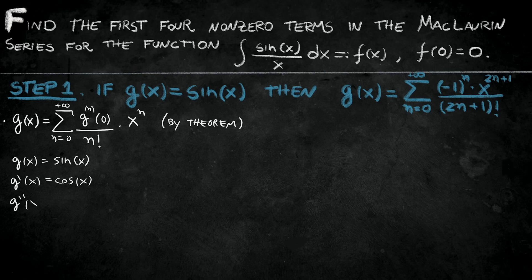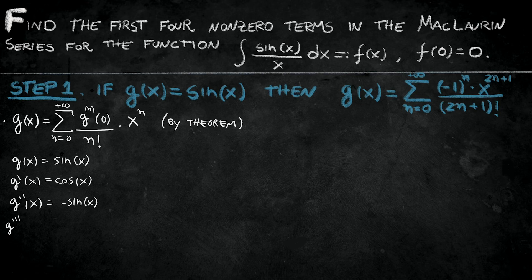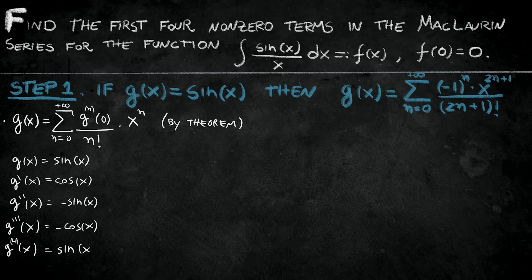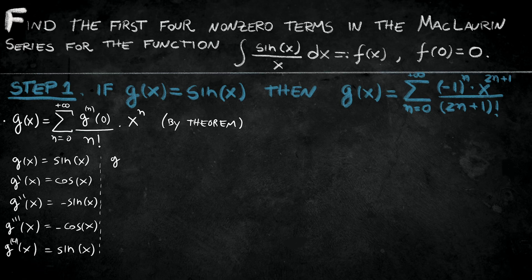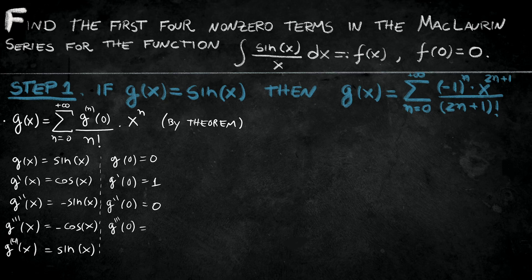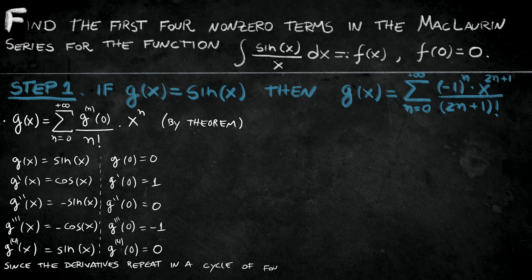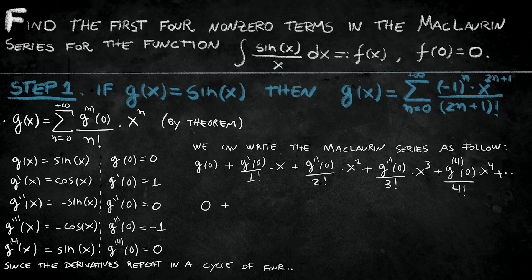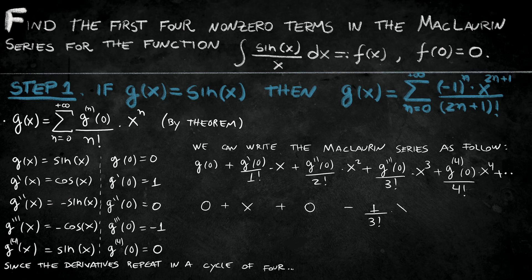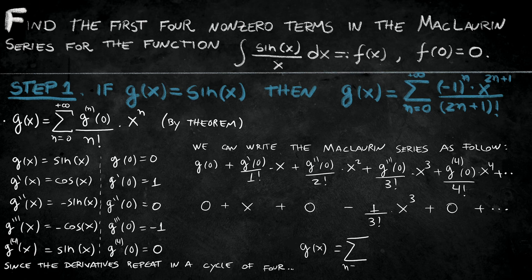I have sine and the second one cosine, third one minus sine, fourth minus cosine, and then I come back to sine. And then when you evaluate this at 0, I have g of 0 is 0, g prime of 0 is 1, g double prime of 0 is 0, g the third derivative of g at 0 is minus 1. The fourth derivative comes back to 0. And then we can write the Maclaurin series as follows. So notice I'm going to have 0 plus x plus 0 minus 1 over 3 factorial x cubed plus 0, and then I can continue.